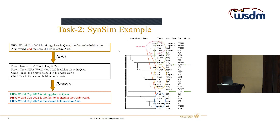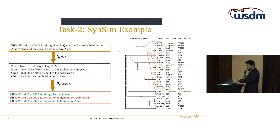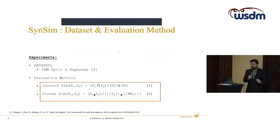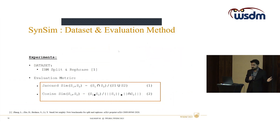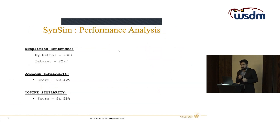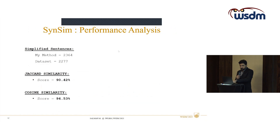If we give the original complex sentence to any information extraction system, there might be errors and missing facts. But if we give these simplified sentences, it is much easier for the information extraction system to extract complete and accurate information. We evaluated this syntactic simplification method on the IBM split-and-rephrase dataset with re-annotations, using two metrics — Jaccard similarity and cosine similarity — achieving scores of 90.42% and 94.53% respectively.